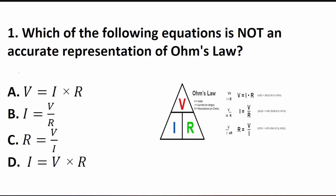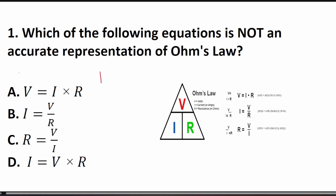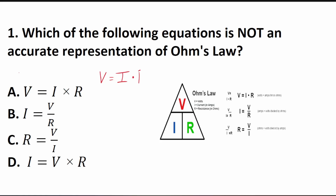Question 1 asks: which of the following equations is not an accurate representation of Ohm's Law? Ohm's Law states that voltage (in volts) equals current (I, in amps) times resistance (R, in ohms). This matches answer A, so A is an accurate representation. You can also solve Ohm's Law in terms of current, which gives answer choice B — so B is also a valid form of Ohm's Law, solved for I.